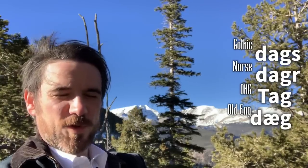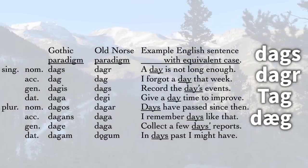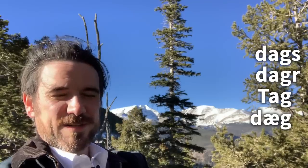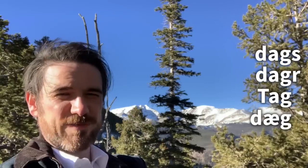Notice too that if we look at the full paradigm — that is, the full available grammatical forms of dags in Gothic and dagr in Old Norse — that the -s and the -r are always dropped before we add the other endings. So in Old Norse, to make the genitive singular form, we don't say dagars, we say dags. So clearly the root of the word is still dag. And the same in Gothic, just as it is probably underlying in Old High German and Old English.